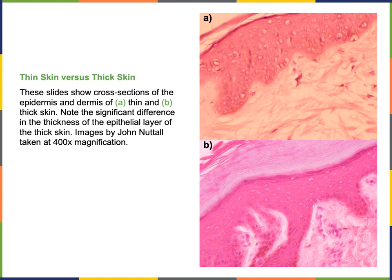In a light micrograph of thin skin, we can see a much thinner layer of stratum corneum and no stratum lucidum layer between stratum granulosum and stratum corneum. In contrast, thick skin has much more exaggerated epidermal ridges, a much larger layer of stratum corneum, and an extra layer — stratum lucidum — found between stratum corneum and stratum granulosum.